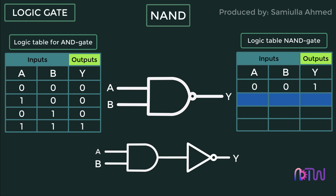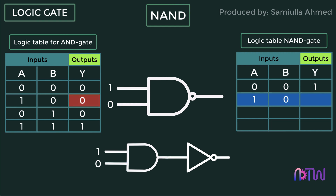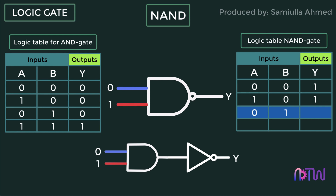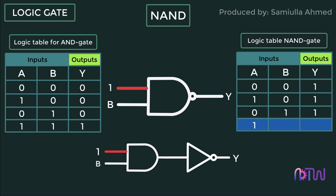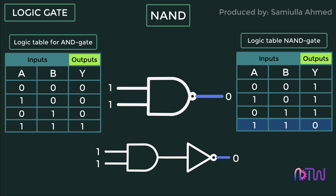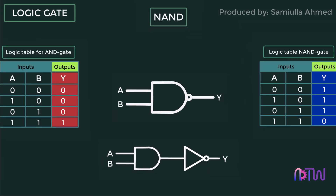For the second set of inputs A equals one and B equals zero, the AND gate output is zero; after passing through the NOT gate, the final output is one. Similarly, for the third set A equals zero and B equals one, the AND gate output is zero; after passing through the NOT gate, the final output is one. For the last set A equals one and B equals one, the AND gate output is one; after passing through the NOT gate, the final output is zero. The output of the NAND gate is opposite to the AND gate.